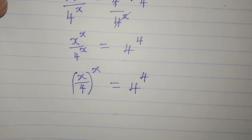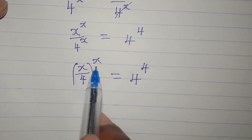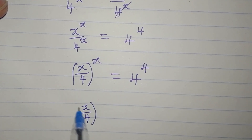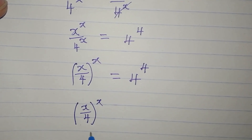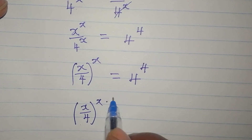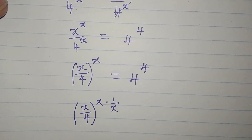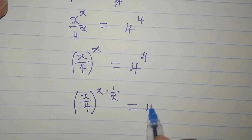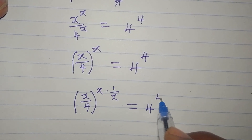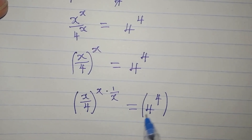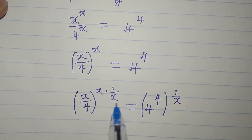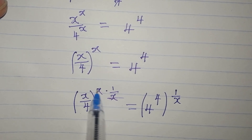Now we want to remove the x power. We raise both sides to the power of 1 over x: on the left we get x over 4 to the power of x times 1 over x, and on the right we have 4 to the power of 4 raised to the power of 1 over x.